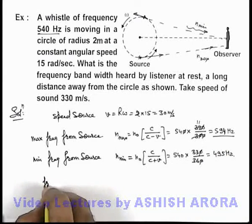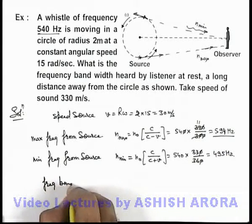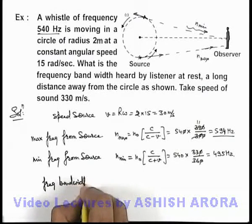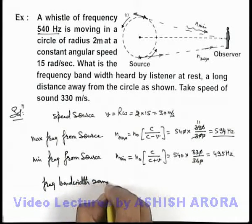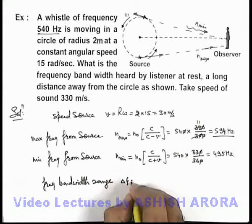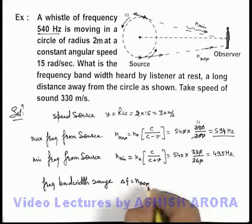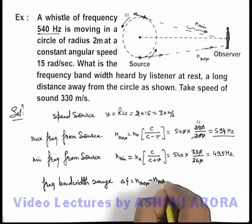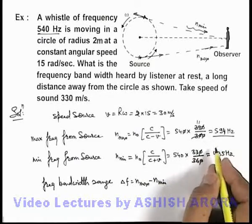So we can easily find out the frequency bandwidth range, which is observed by the observer. It will be Δf = n_max - n_min. This is the difference of the two frequencies.